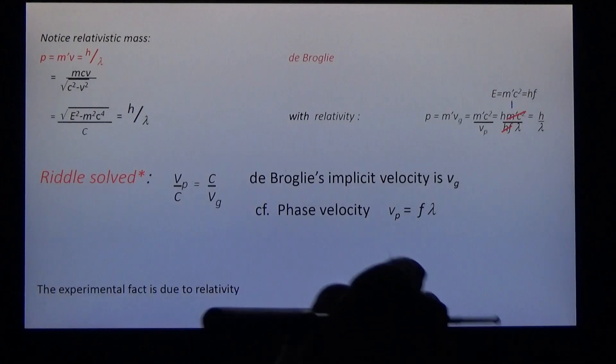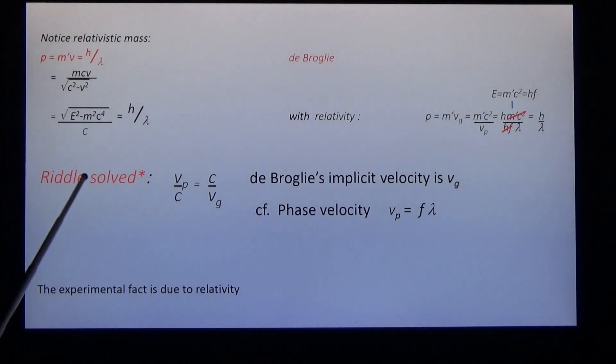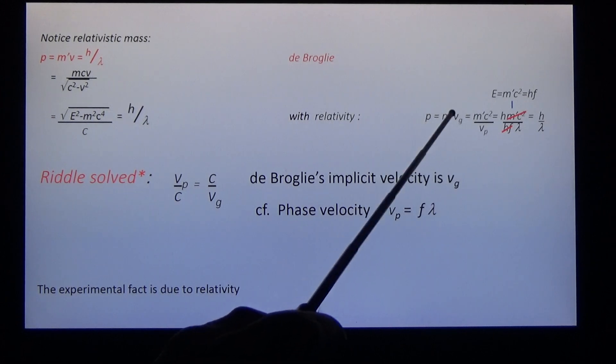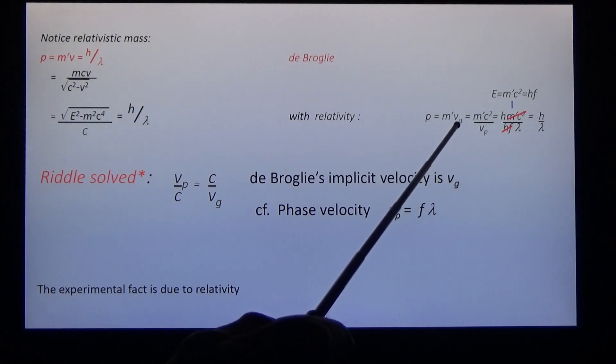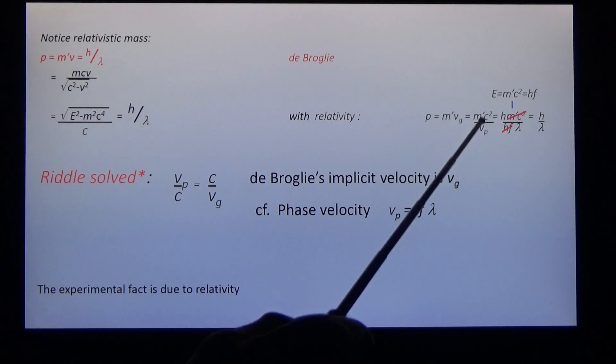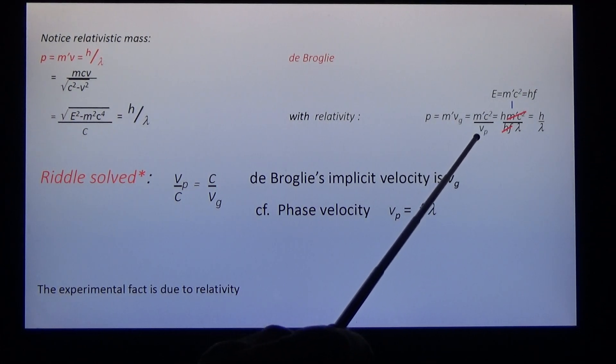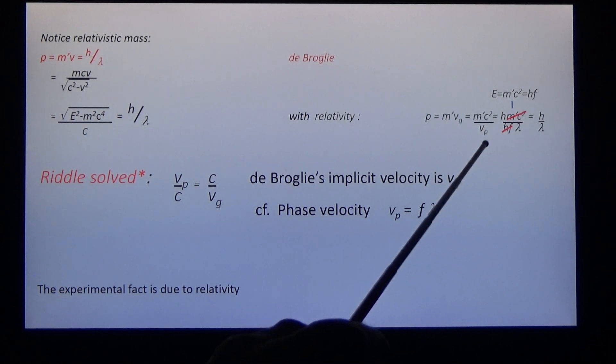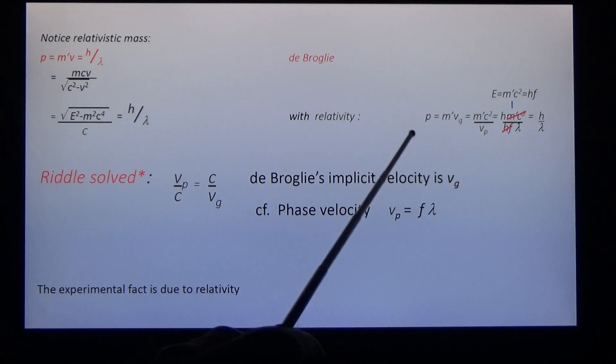We can come to some conclusions. The riddle is solved. de Broglie's implicit velocity is the group velocity, not the phase velocity. We have two calculations in relativity: momentum as relativistic mass times group velocity. Group velocity is c squared over vp. That's a relativistic result. And vp is equal to f times lambda.